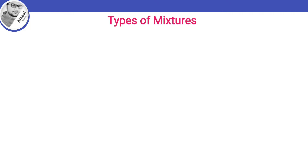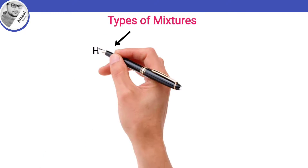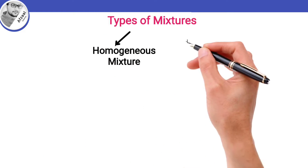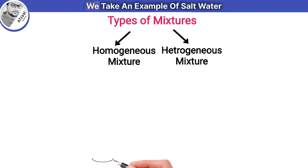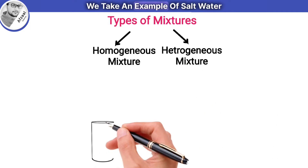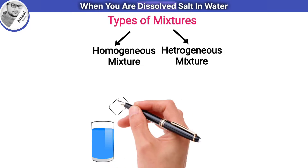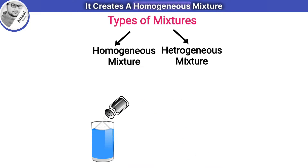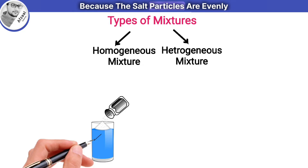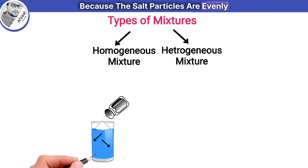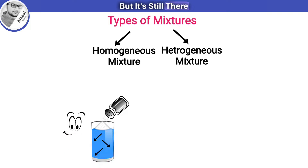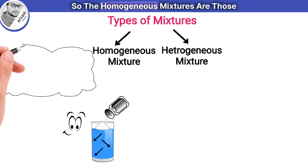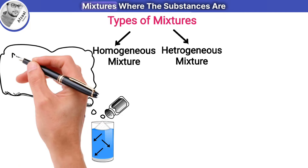Now we are going to discuss the different types of mixtures. There are two types: homogeneous mixture and heterogeneous mixture. Take the example of salt water — when you dissolve salt in water, it creates a homogeneous mixture because the salt particles are evenly spread out. You can't see the salt anymore, but it's still there.